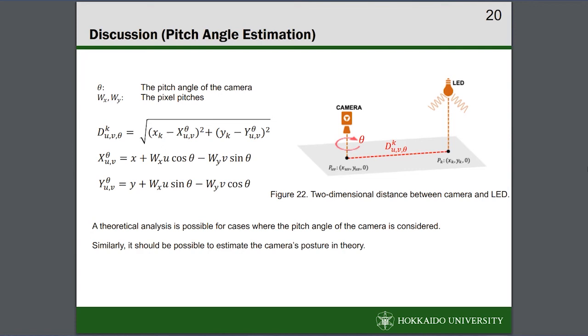In our proposed method, we obtain the 2D coordinates of the camera without consideration of the camera posture. However, a theoretical analysis is possible for cases where the pitch angle of the camera is considered. In such cases, the camera's pitch angle theta can be varied freely while maintaining the level and two-dimensional distances between camera and LEDs can be formulated by these equations. Similarly, it should be possible to include the roll and yaw angles in the calculation and the camera's posture can be estimated.